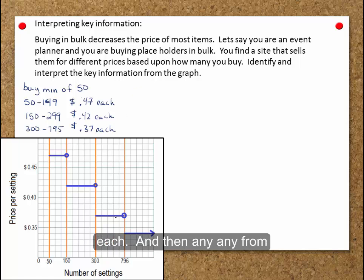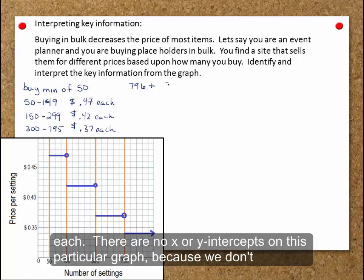And then any from 796 up, they are 34 cents each.